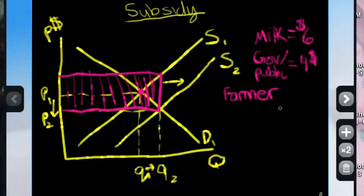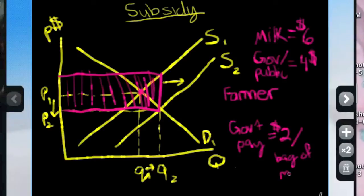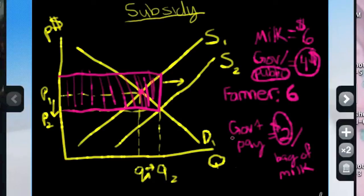So what the government is going to do is the government is going to pay $2 per bag of milk. So the farmer is getting $6, but this $6 is made up of the $4 from the public and the $2 from the government.